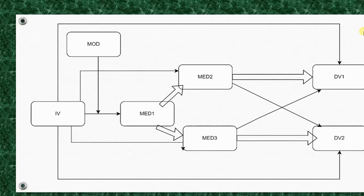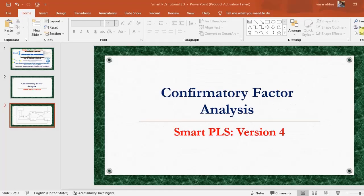This model has basically three mediators, two dependent variables, one moderation effect, and one independent variable. In other models you may have different variable settings — more than one or two independent variables, one or two mediators, and different dependent variables. This model also contains parallel and sequential mediation, which provides an opportunity to learn how to run sequential and parallel mediation with moderation.